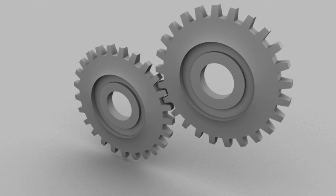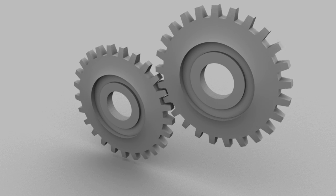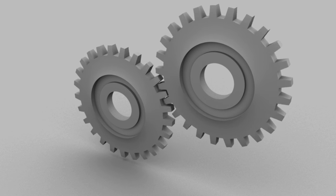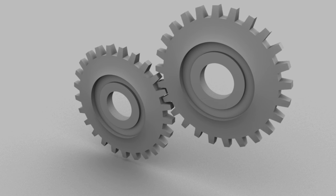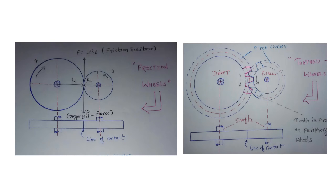So to eradicate this problem, we use a gear mechanism in any power transmission system. In precision machinery where a definite velocity ratio is required, a positive drive or gear drive is used. Actually, it is a modified form of a friction wheel. To avoid slipping, teeth are provided on the periphery of the friction wheel. Such type of construction is called a gear.